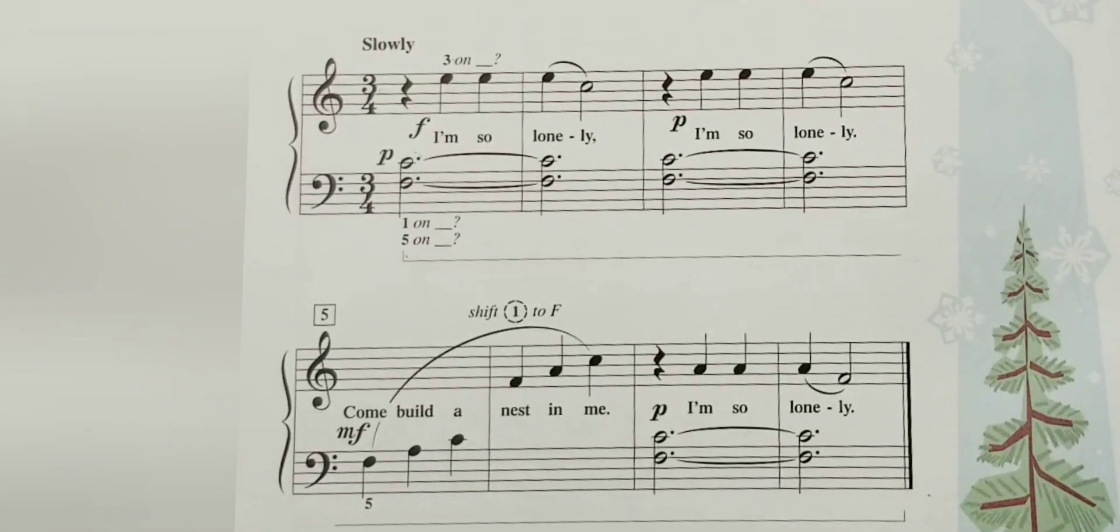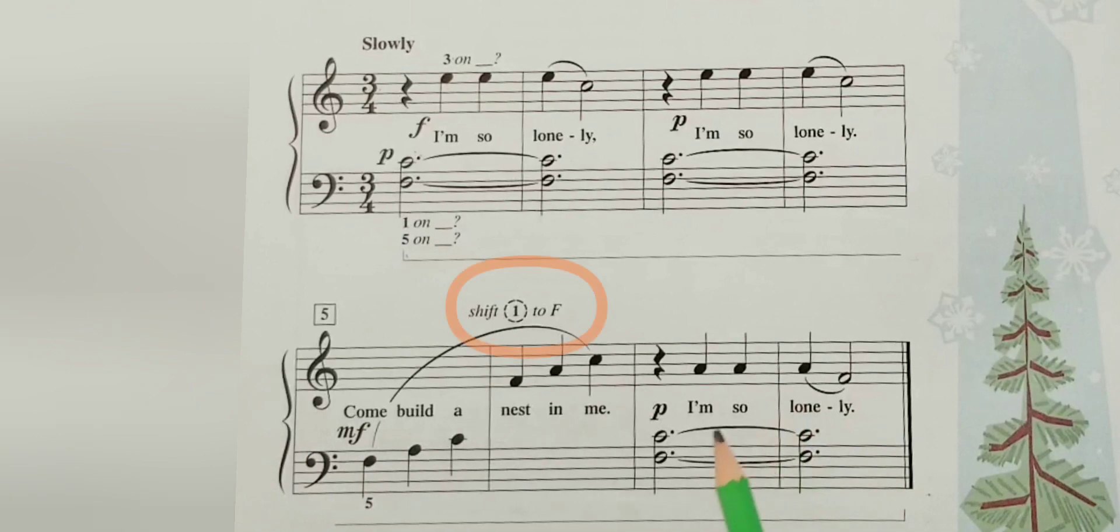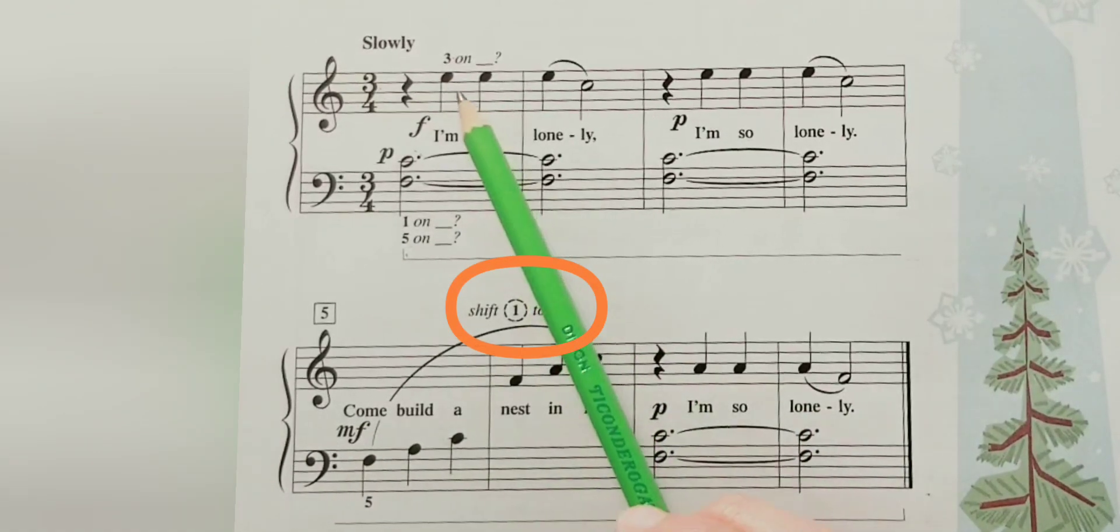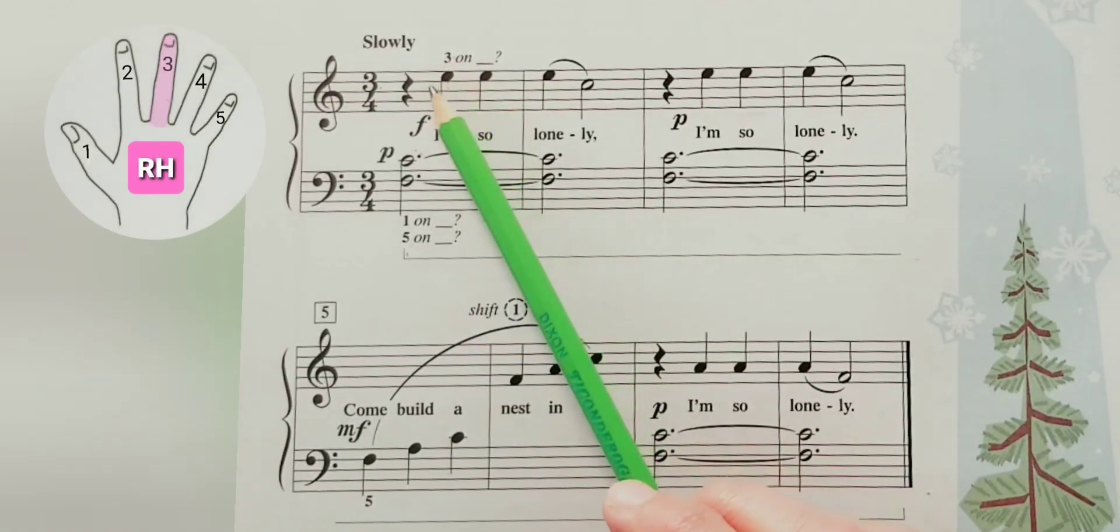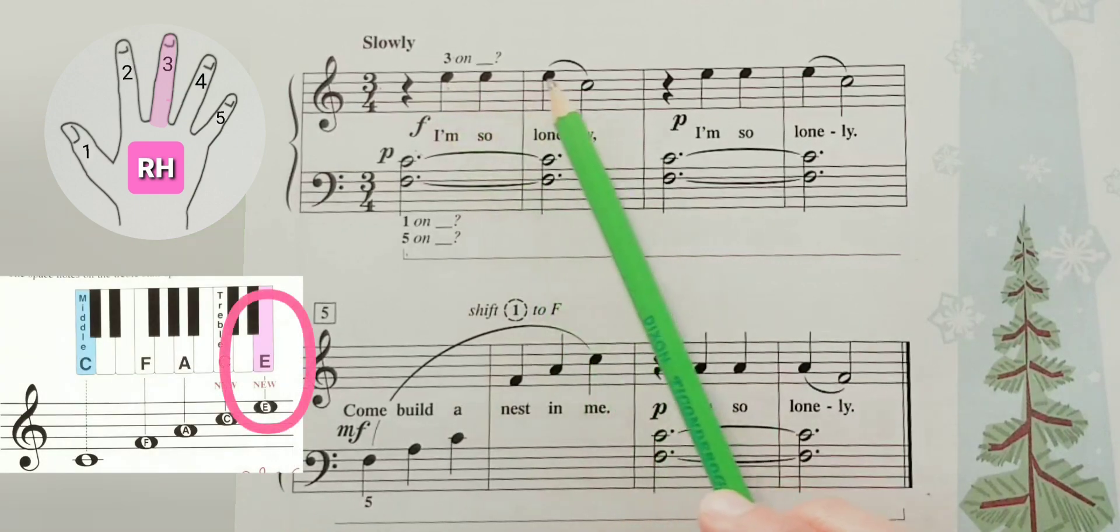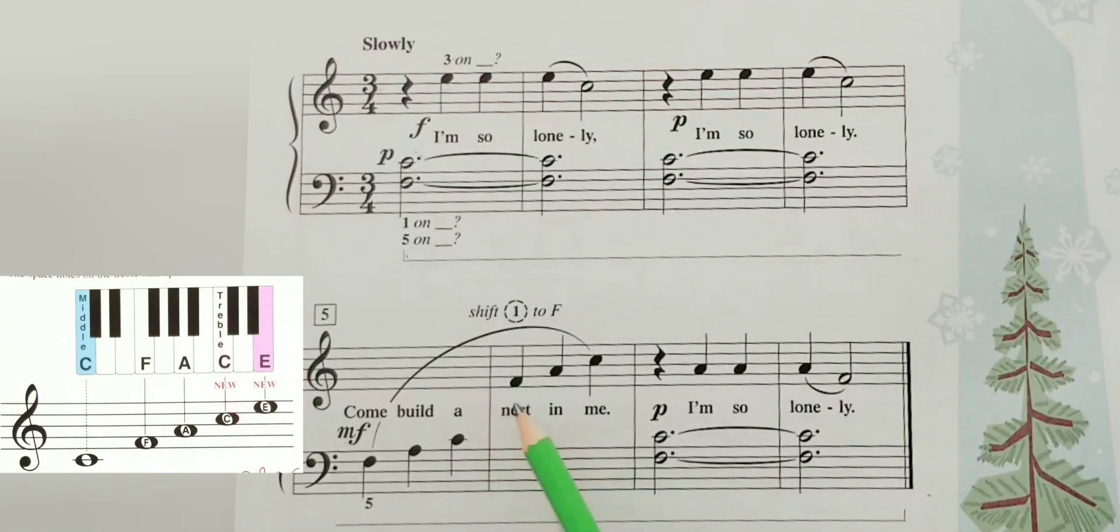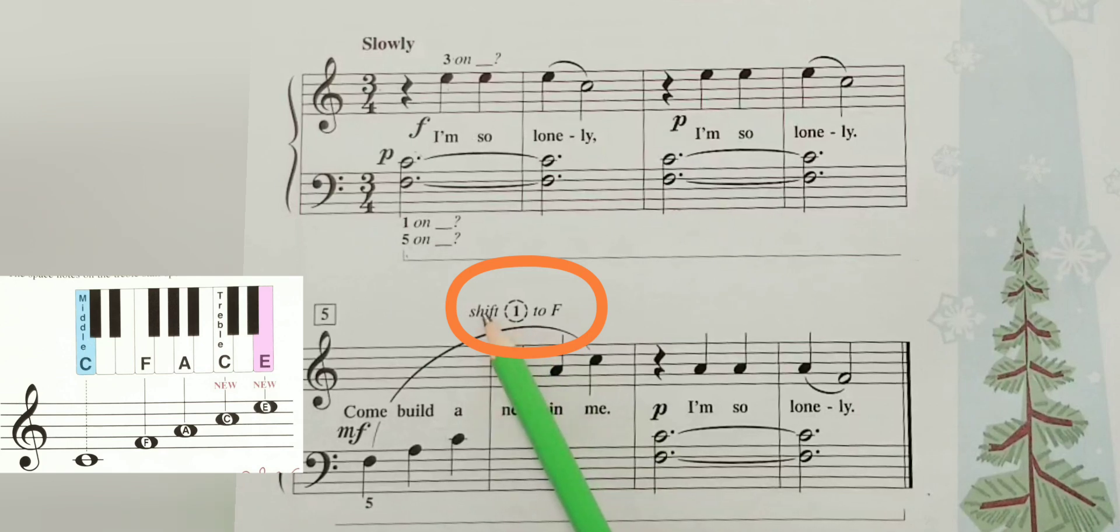In this piece you are going to learn how to do a hand shift, which means that you are going to have your finger three on treble E. But then on measure number six you will shift finger one to F, like this.